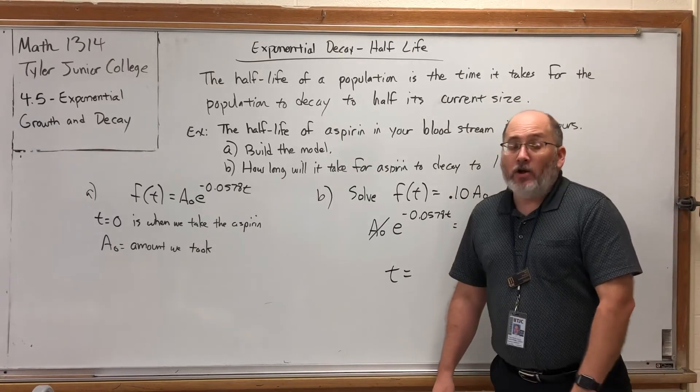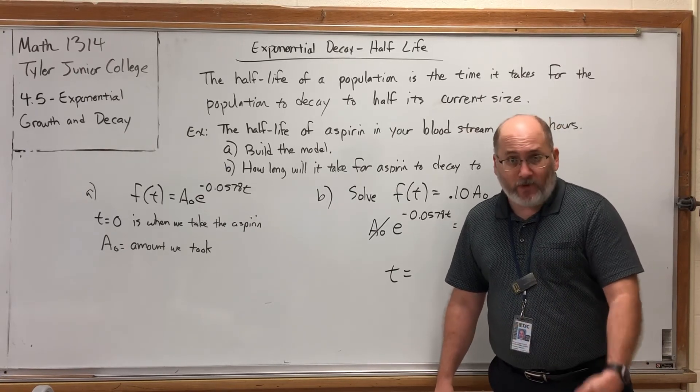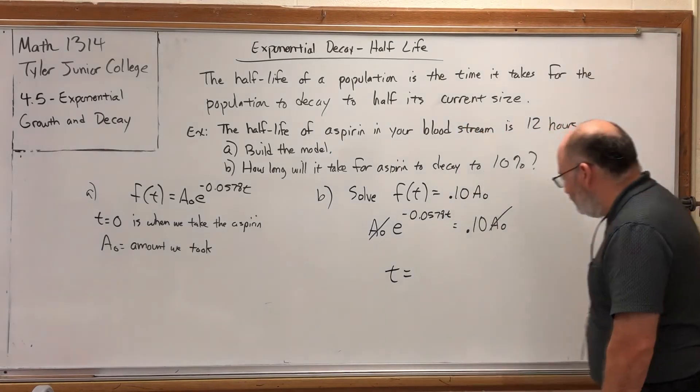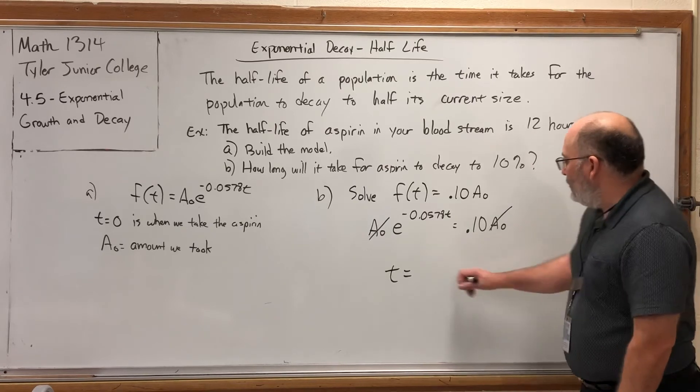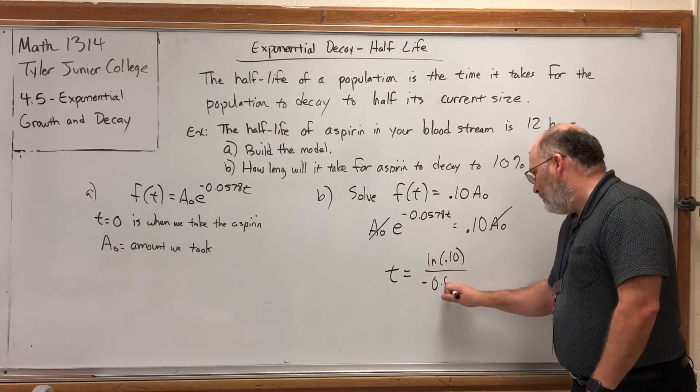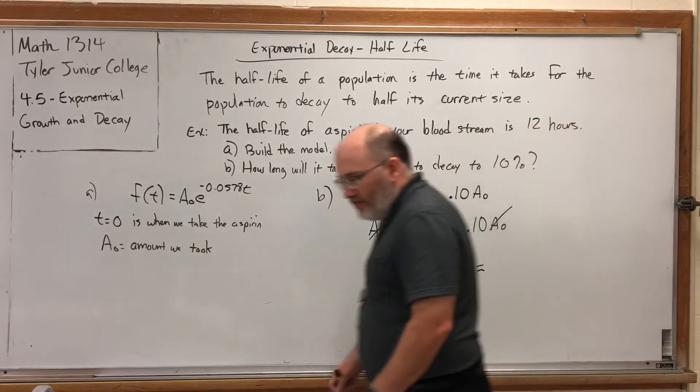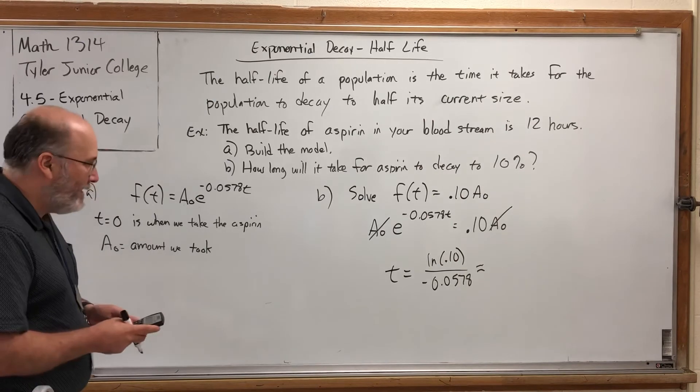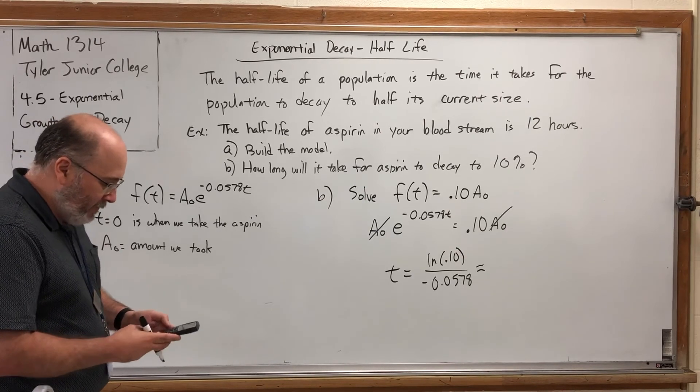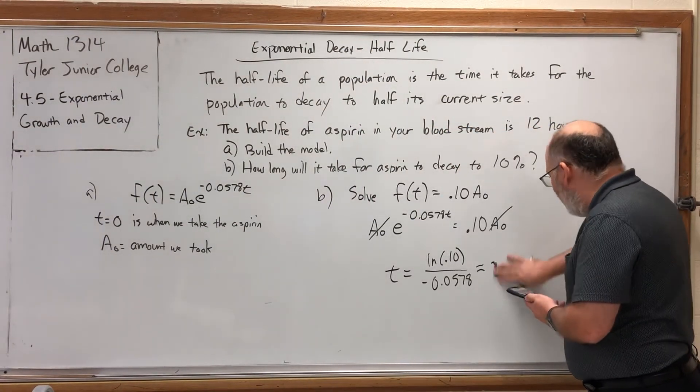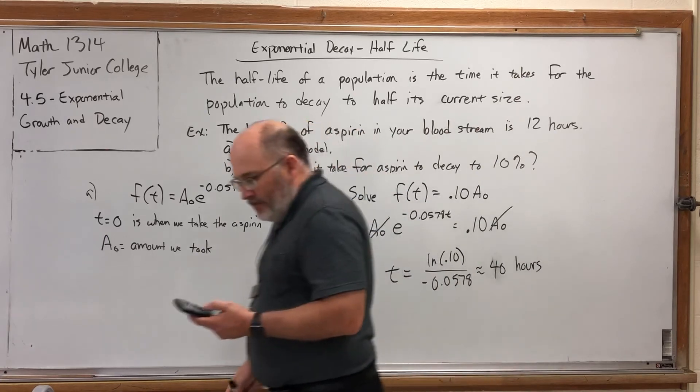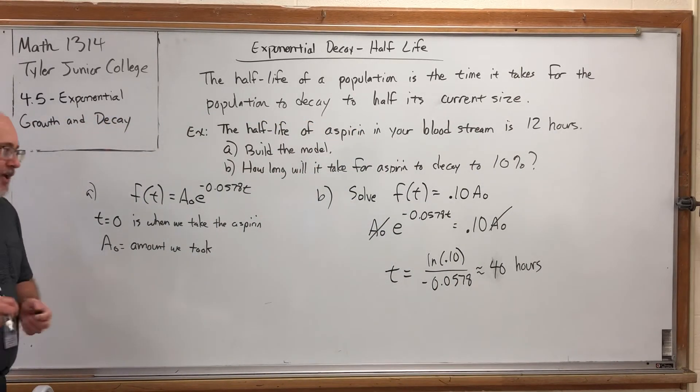We would take the natural log of both sides, which means we'd get the natural log of 0.10. That would cancel the E, and then we would divide by the coefficient of T, negative 0.0578. So whatever that is, the number of hours it will take for the aspirin to decay to 10% of the amount that we took. The natural log of 0.10 divided by negative 0.0578, and we get about 39, well, let's round it to the nearest hour. It's 39.8, but we'll say it's approximately 40 hours. In theory, the aspirin will never leave your bloodstream, but at some point it's going to be negligible and virtually zero.